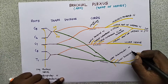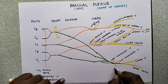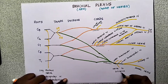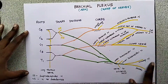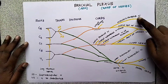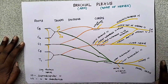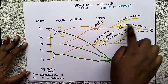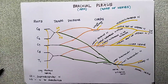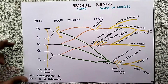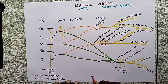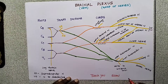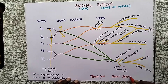This is the diagrammatic representation of the brachial plexus. The main terminal nerves are the musculocutaneous nerve, median nerve, ulnar nerve, axillary nerve, and radial nerve — arising from the roots, trunks, divisions, and cords. Thank you; I hope this video was helpful, especially if you are in the medical field.